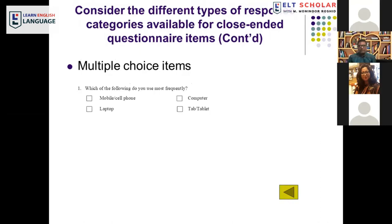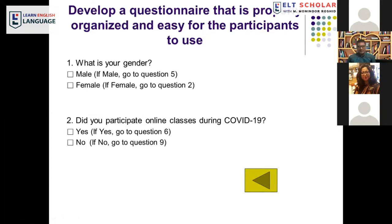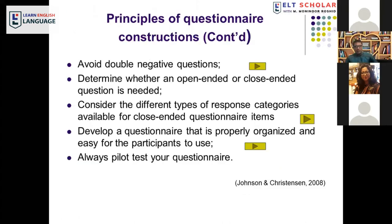The next principle is to develop a questionnaire that is properly organized and easy for participants to use. For example, question 1 asks about gender — 'If male, go to question 5; if female, go to question 2.' Question 2 asks 'Did you attend online classes during COVID-19? If yes, go to question 6; if no, go to question 9.' This kind of organized structure makes it easy for participants to respond. Always pilot test your questionnaire before going to the field.